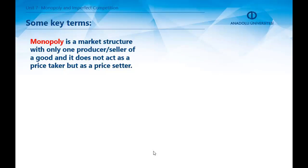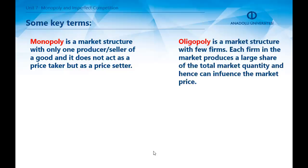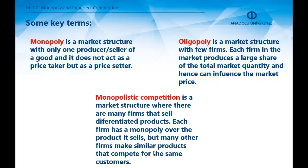The first key term is monopoly — a market structure with only one producer or seller of a good. It does not act as a price taker but as a price setter. The next one is oligopoly — a market structure with few firms where each firm produces a large share of total market quantity and can influence the market price. The last one is monopolistic competition — a market structure where many firms sell differentiated products.